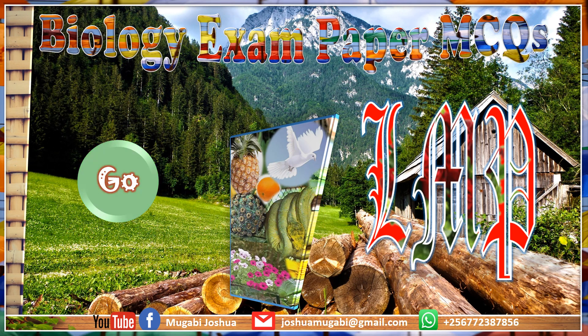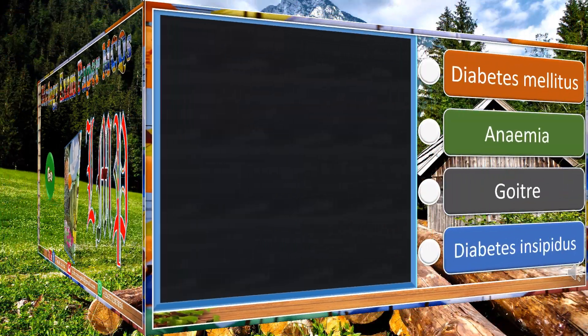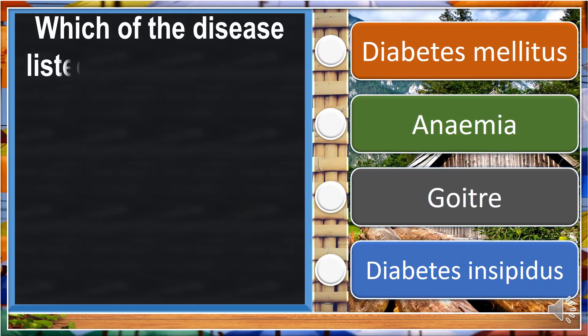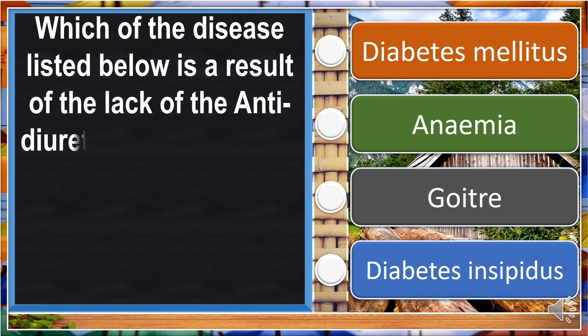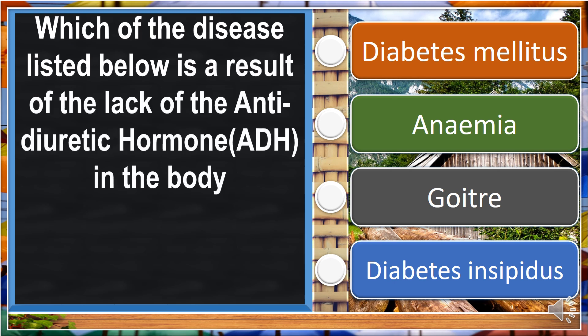Let's start. Which of the diseases listed below is a result of the lack of antidiuretic hormone ADH in the body? Diabetes insipidus.